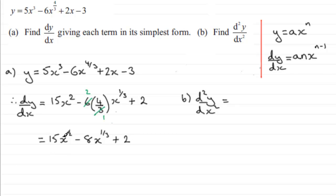If we take the first term 15x squared and differentiate that, it's going to be 2 times 15 which is 30, reduce the power by 1, so that's x to the power 1 or just simply x. For the second term we've got minus 8 times a third, reduce the power of x by 1, that's x to the power minus 2 thirds.